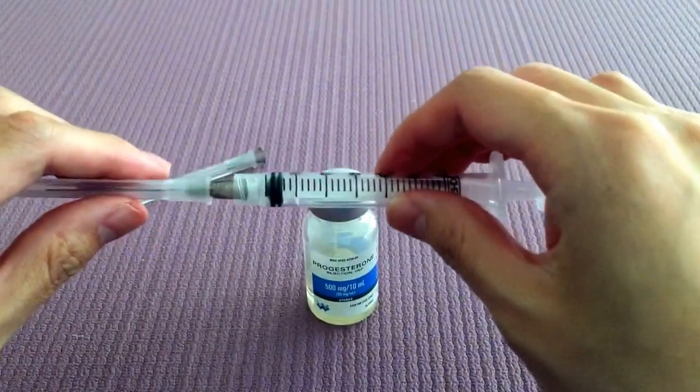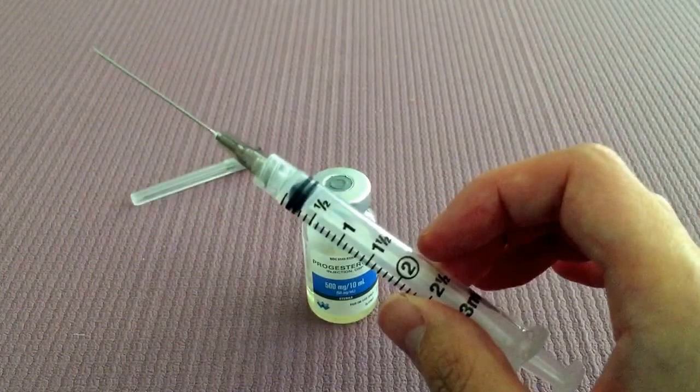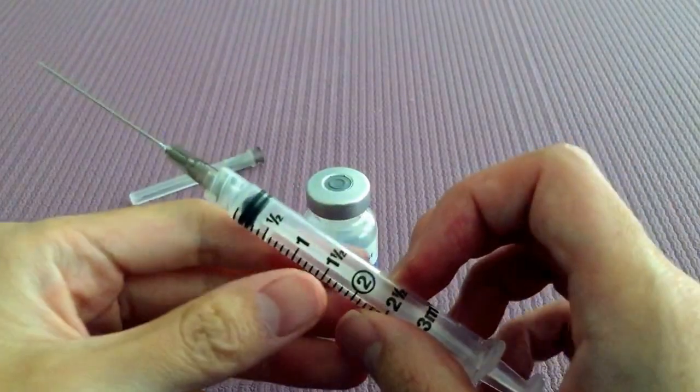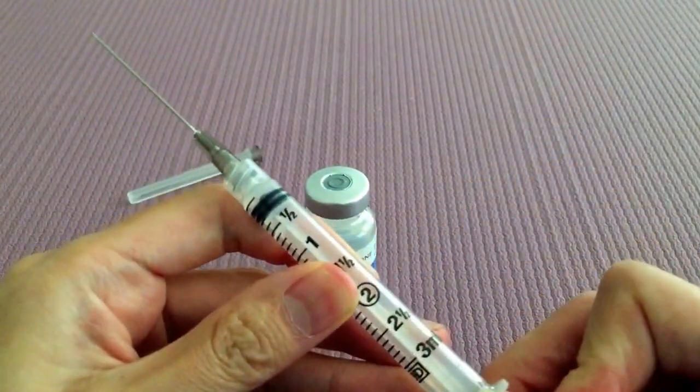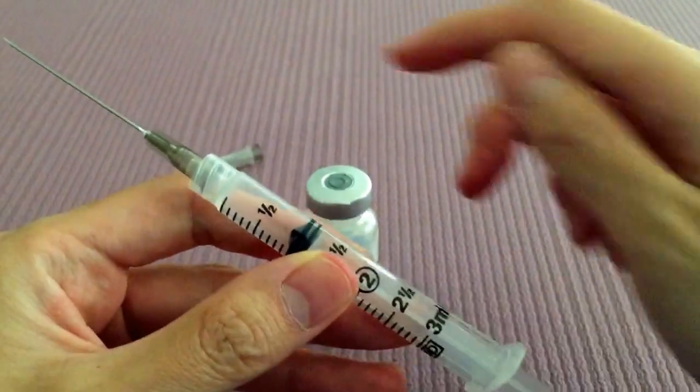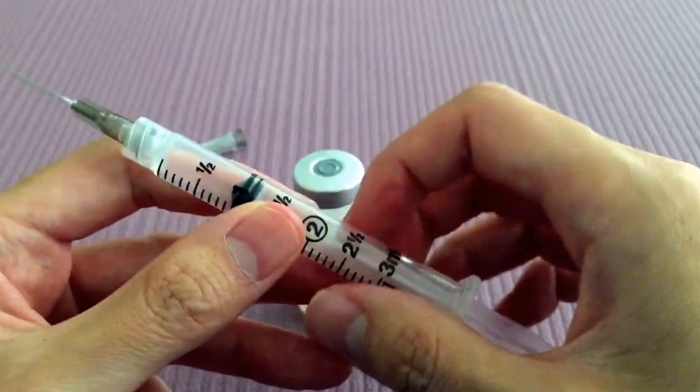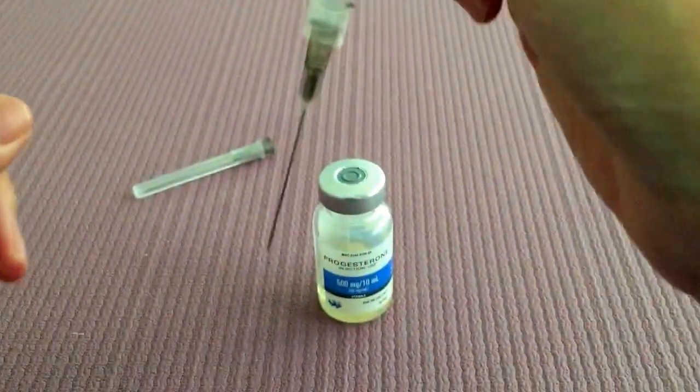So first thing I'm going to do is draw some air. Depending on your dosage, let's just say it's 1 ml, I'm going to draw 1 ml of air. The reason why we do this is because it's highly pressurized inside. You're going to inject the air back into the vial just so that it makes it easier to draw up.